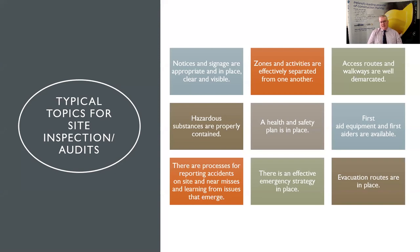As you're going around sites you will come across signage that is appropriate or inappropriate — signs need to be clear and visible, and if not appropriate to what's going on they need to be removed. You have zones and activities that are actively separated for good reason based on hazard identification. Access routes and walkways must be well demarcated and managed from a housekeeping point of view. Hazardous substances must be contained to make sure the risk is managed, and the health and safety plan must be in place and active at all times.